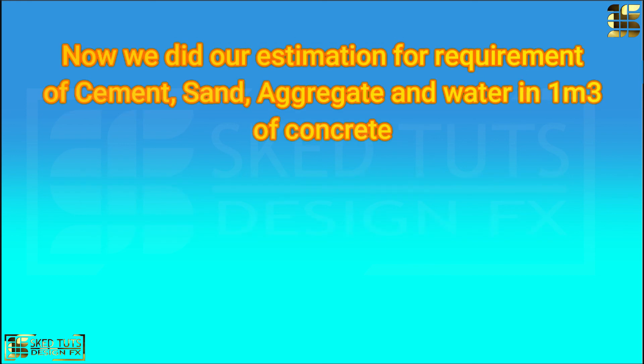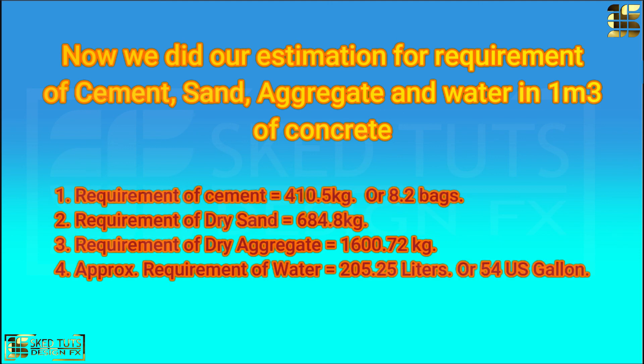We did our estimation for requirement of cement, sand, aggregate and water in 1 cubic meter. Requirement of cement: 410.5 kg or 8 bags. Requirement of dry sand: 684.8 kg. Requirement of dry aggregate: 1600.72 kg. Approximately requirement of water: 205.25 liter or 54 U.S. gallon. So friends, I hope you like this interesting video.